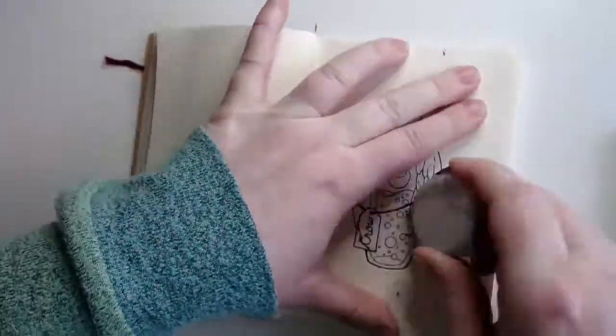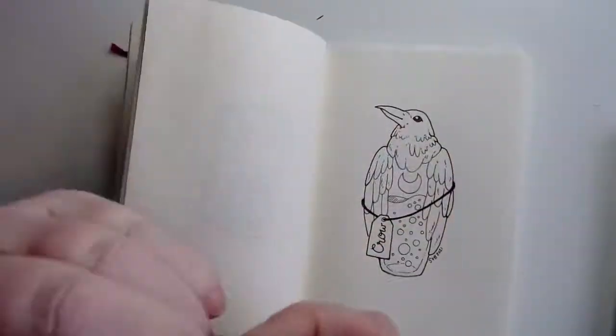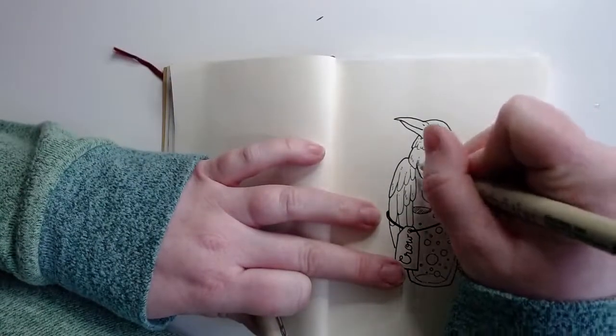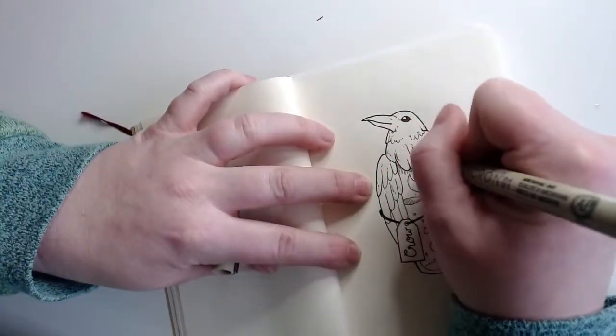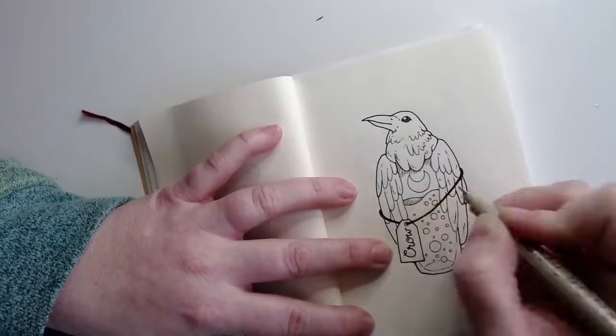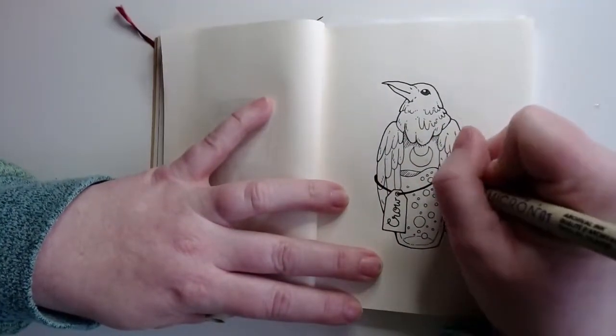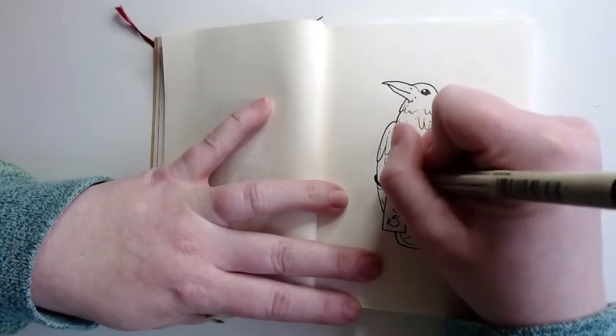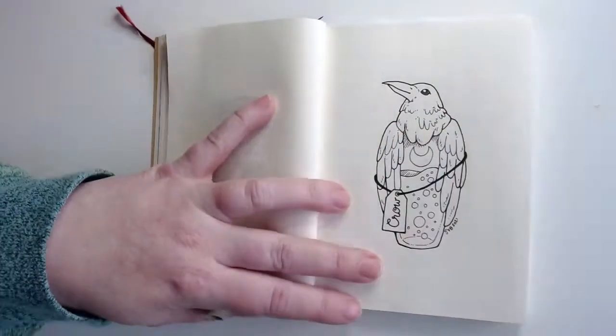And here I am erasing. Thankfully I did not wreck this page when I erased it. And I am just going in and adding more shading and more little details to make it look marked up or like there is texture on the wings and feathers.